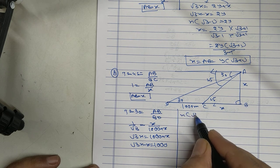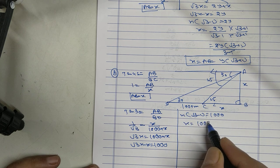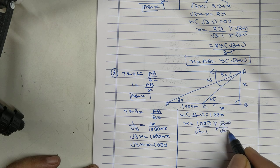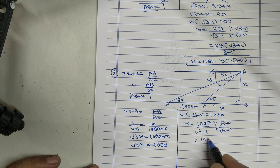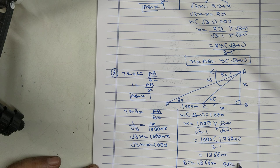So, X common, root 3 minus 1 equals, X equals... Rationalize 1000, 3 minus 1. I will get, so BC is 1366 meter, and BD is 2366 meter.